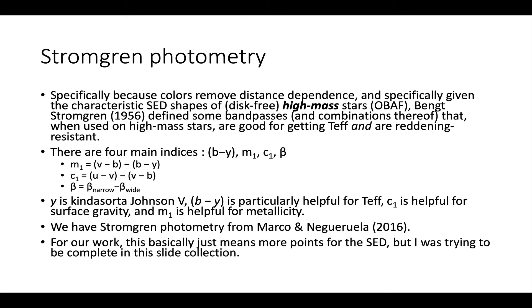Now I have to have a couple of slides about Stromgren photometry. Specifically because you can get rid of distance when you work with colors, and specifically given the SED shapes of disc-free high mass stars, by which I mean O and B and some A and F, there was an astronomer called Bent Stromgren in 1956 who defined some filter band passes and more specifically combinations of the filter band passes that specifically for high mass stars are really good for getting effective temperature and even metallicity and moreover are resistant to reddening. There are four main indices: B minus Y, M1, C1, and beta.